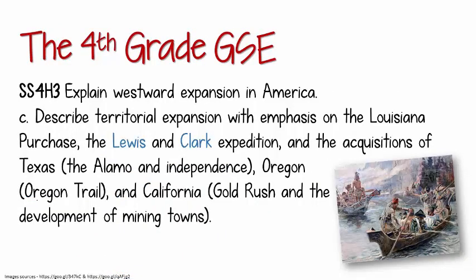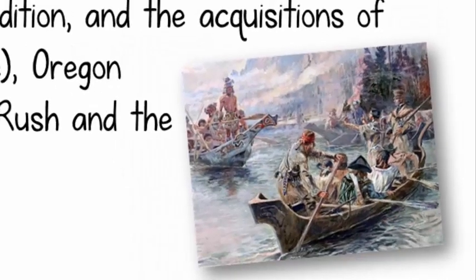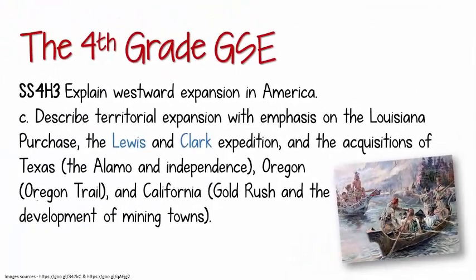The only explicitly mentioned people in 4-H-3 are Meriwether Lewis and William Clark, the leaders of the expedition to explore the Louisiana Purchase. Two notable members of that expedition group were Sacagawea, a Shoshone woman, and York, Clark's enslaved African-American valet. The purpose of this element is to describe how the nation grew geographically; however, the attention to details about the lives of the men and women involved in the territorial expansion are left up to you and your students.